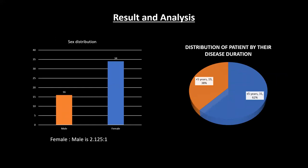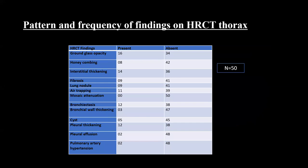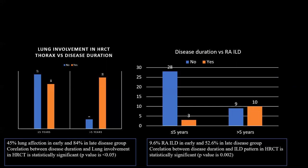In results and analysis, there was a female preponderance with a male-to-female ratio of 1:2. Patients were divided by disease duration into early (up to 5 years) and late (more than 5 years) groups. The most common HRCT finding was ground glass opacity, followed by bronchiectasis, interstitial thickening, and pleural thickening. Lung involvement on HRCT Thorax was 45% in the early disease group and 84% in the late disease group, with the correlation being statistically significant.